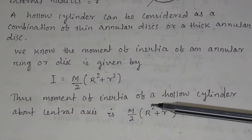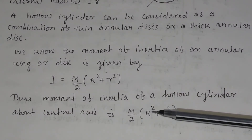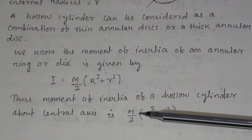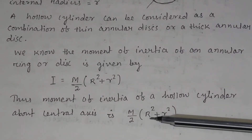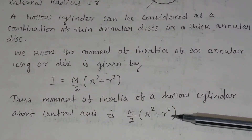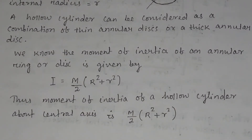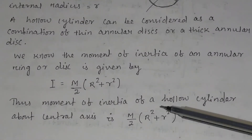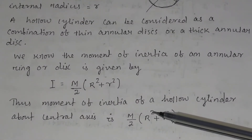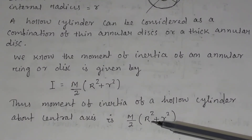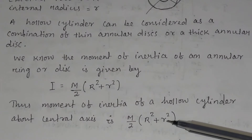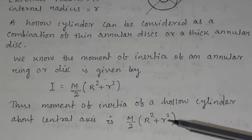The moment of inertia of the hollow cylinder about the central axis will also be equal to m/2 times (R² + r²), that is the external radius squared plus the internal radius squared.